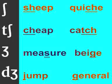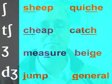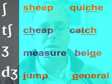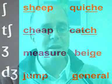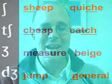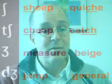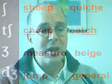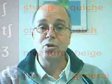The next two are the equivalent voiced consonants: the sound of the S in 'measure' or the G in 'beige,' and the sound of J in 'jump' or G in 'general.' And now for the last four consonant symbols.